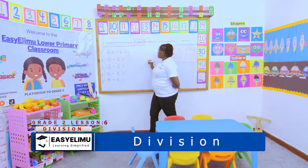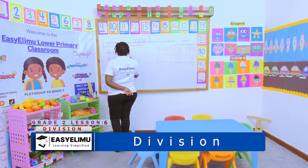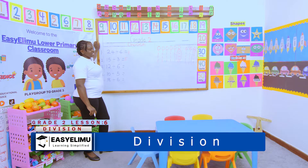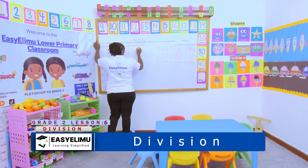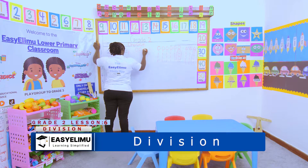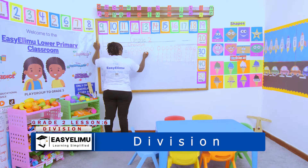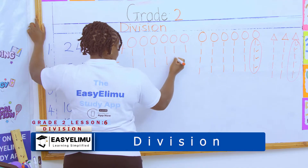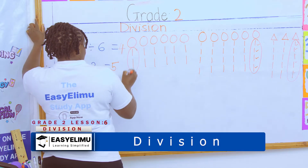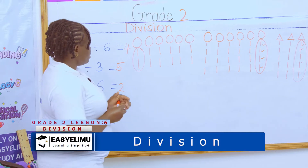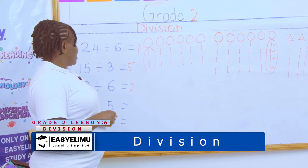How many does each get? One, two, three, four, five — it is five. Number three: 12 divided by 6. I have 12 balls here and I want to share them among six pupils. Counting one through twelve, each one will be getting two. Have you seen that?